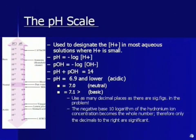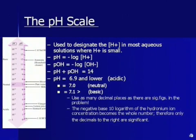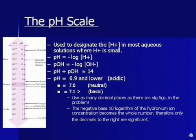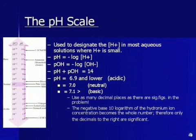If you have a pH 6.9 and lower, it's considered acidic. 7.0 is neutral. Anything higher than 7.1 is considered basic. Use as many decimal places as there are sig figs in the problem. Just try to keep it usually to the 100, it should suffice.